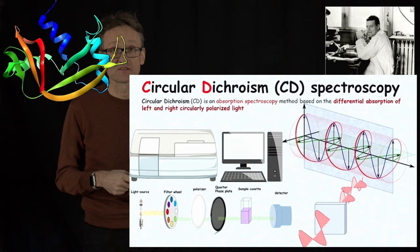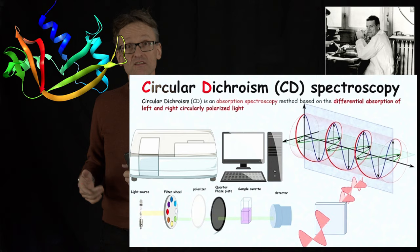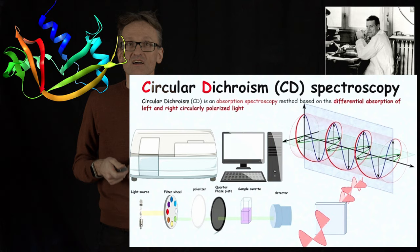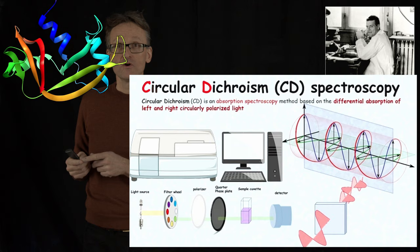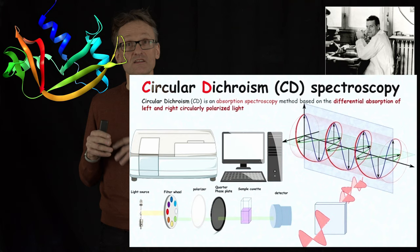Depending on the order they occur, that means that the light will either be right polarized or left polarized. If we then submit beams that contain both right and left polarized light through a sample, what I can then study is the difference in these beams.